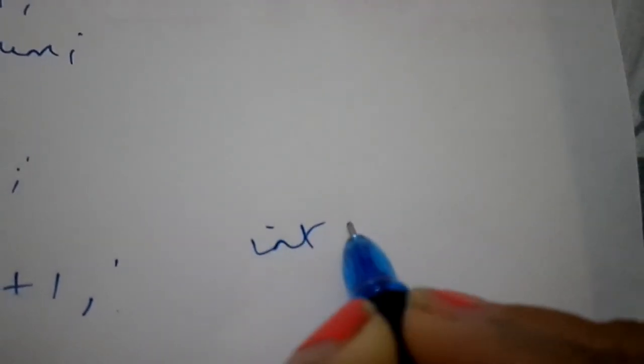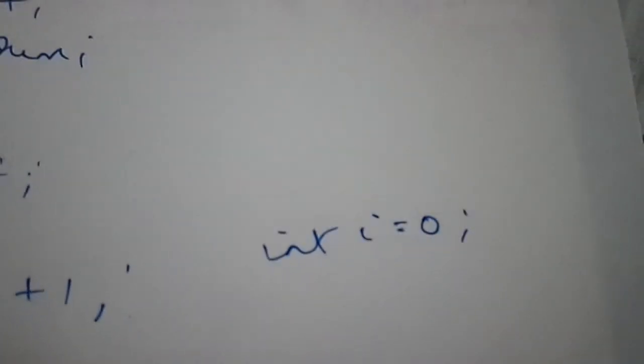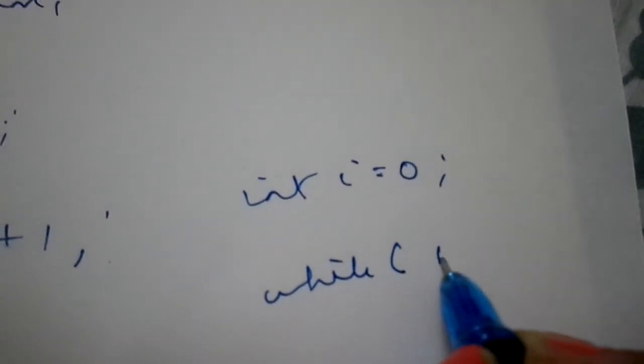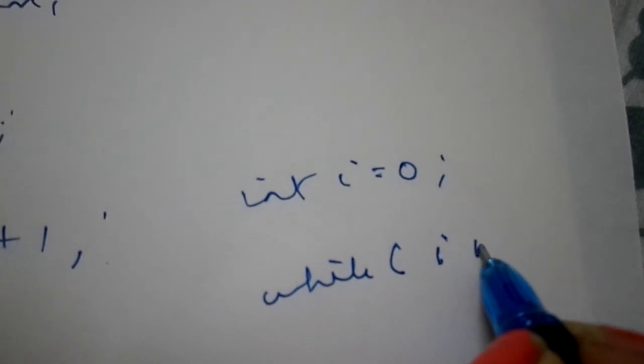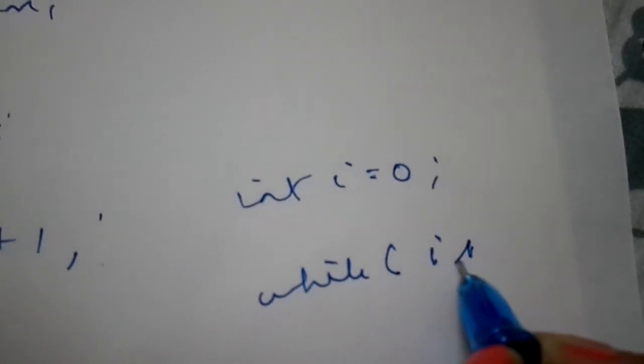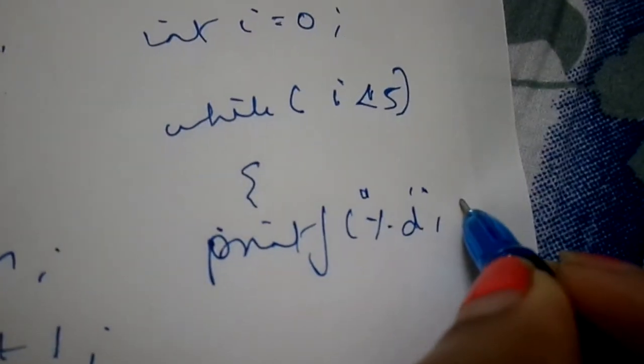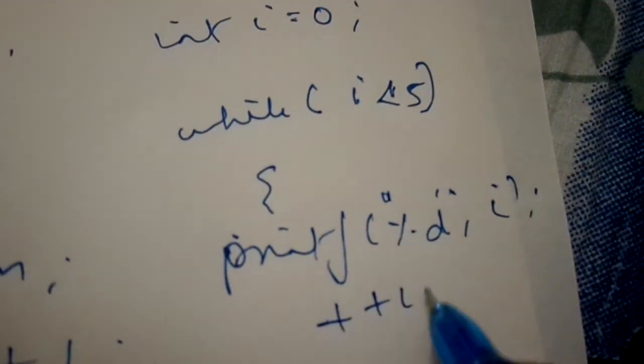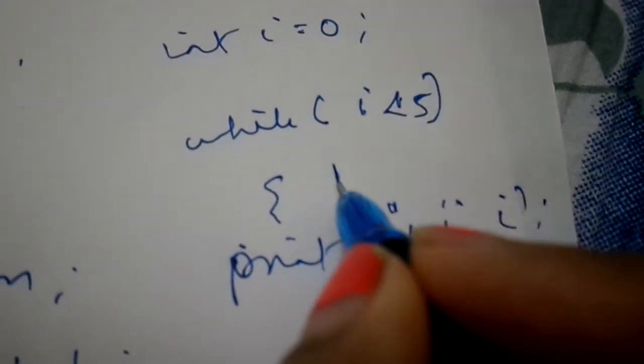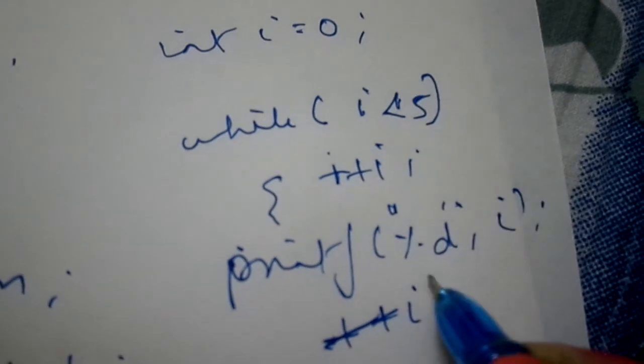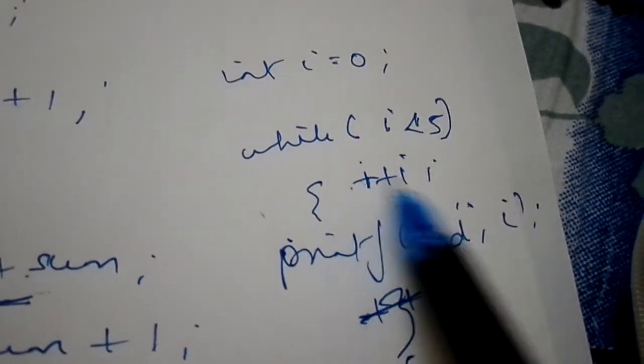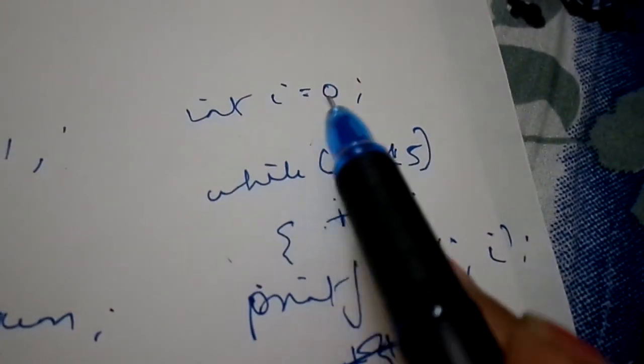Now let me give you another program. Int i = 0; while i is less than 5, printf i, and ++i. So currently i = 0 and it is less than 5.